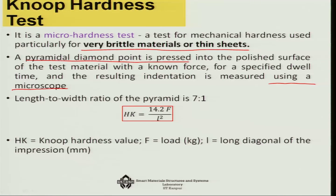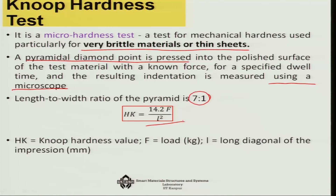The length-to-width ratio of the Knoop pyramid is maintained as 7 to 1. The Knoop hardness value KH is then found using the relationship where F is the load in kg and L is the long diagonal of the impression.